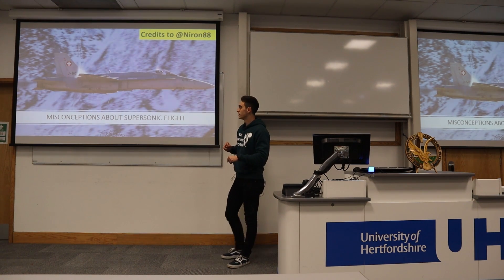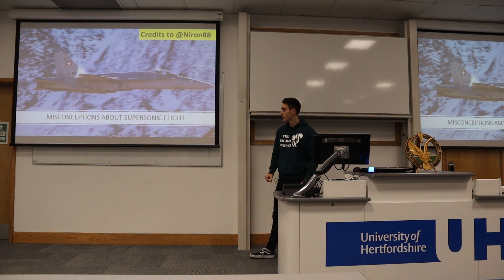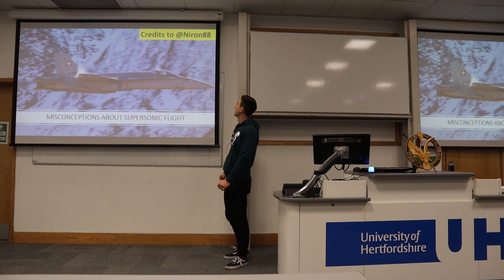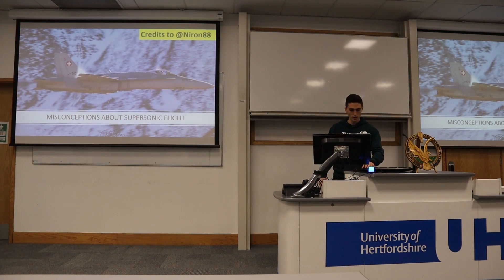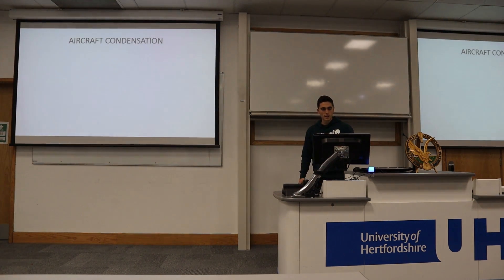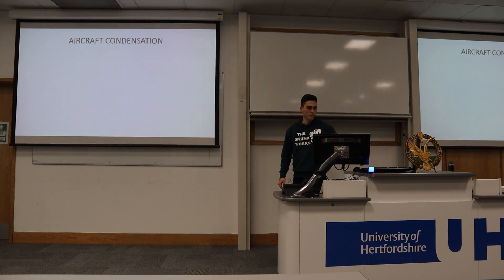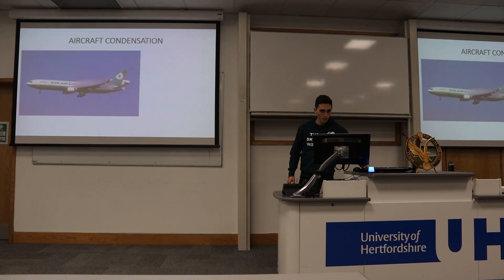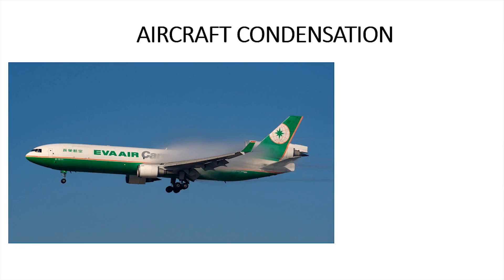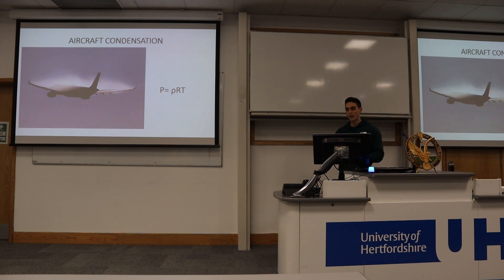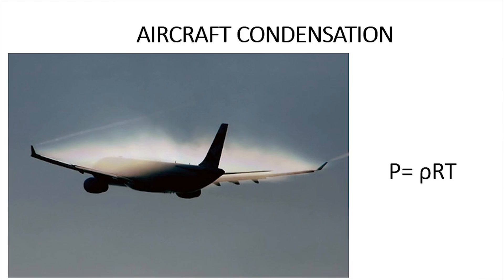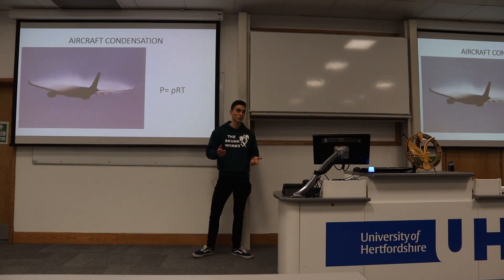By the way, this is an F-18 Hornet from the Swiss Air Force. The picture was taken by 988, just to give him credit. So, let's get started. Aircraft condensation. I think we have all seen those kinds of pictures with condensation above the wings. But why is this really happening? Well, we have to use this equation to explain it — it is the only equation you are going to see here, so don't worry.